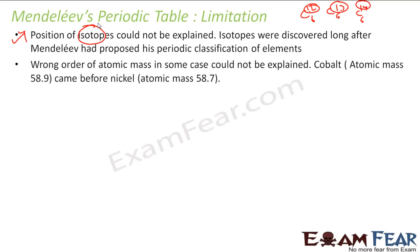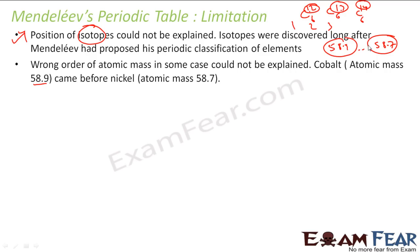Also, the order of atomic mass was wrong in some cases and could not be explained. For example, cobalt has atomic mass 58.9 and came before nickel which has atomic mass 58.7 — so 58.9 came before 58.7. There was a debate about why this was happening. Generally the order should be strictly increasing, so this wrong atomic mass ordering could not be explained at that time.